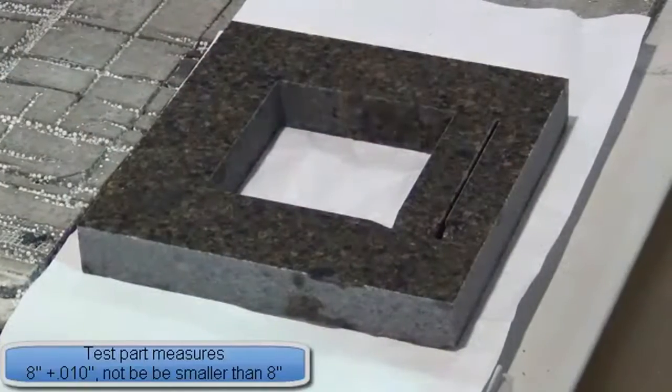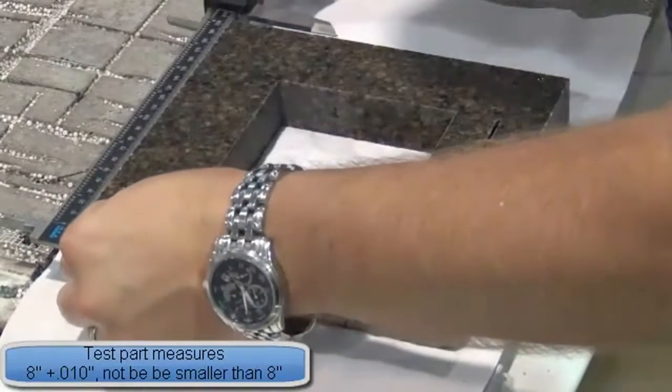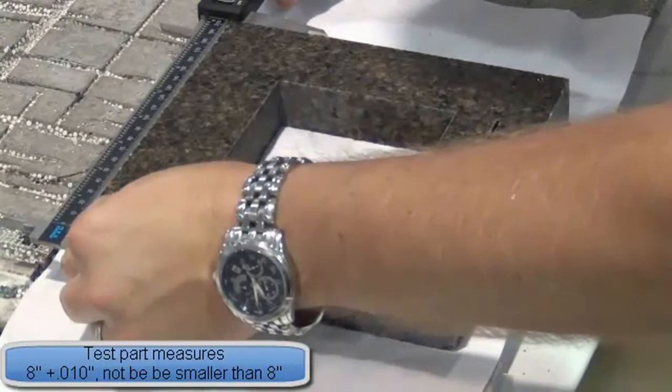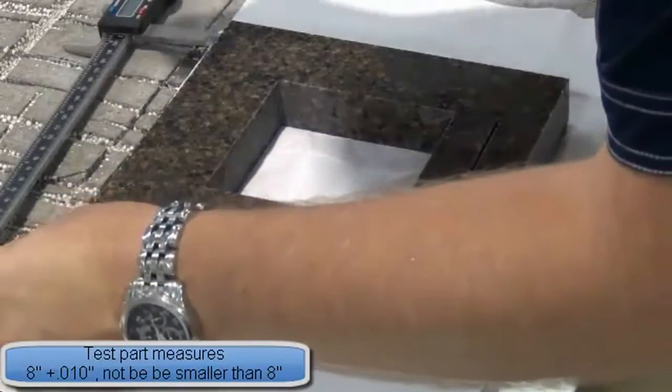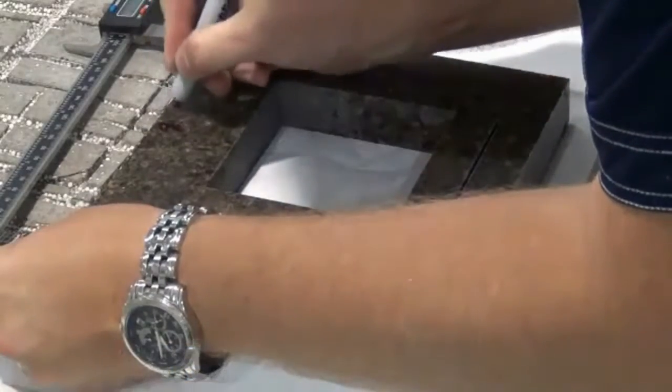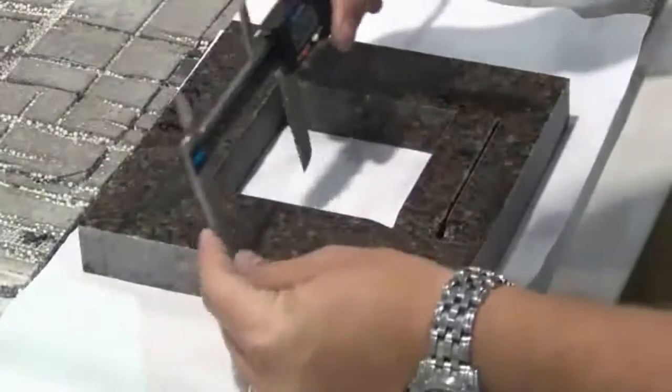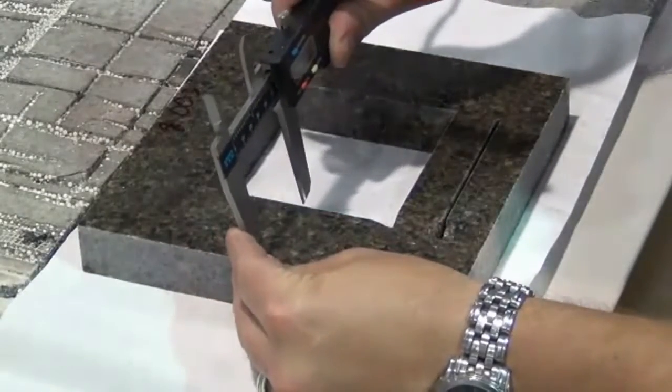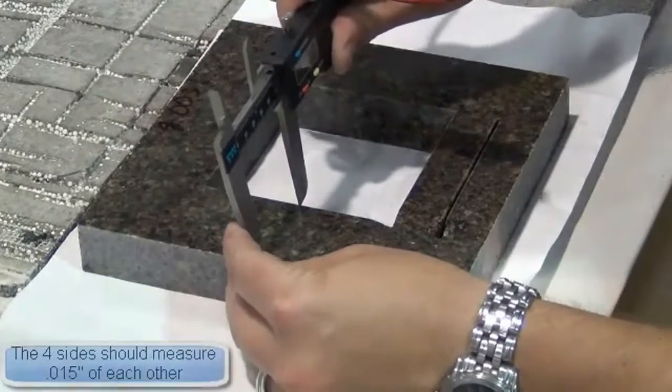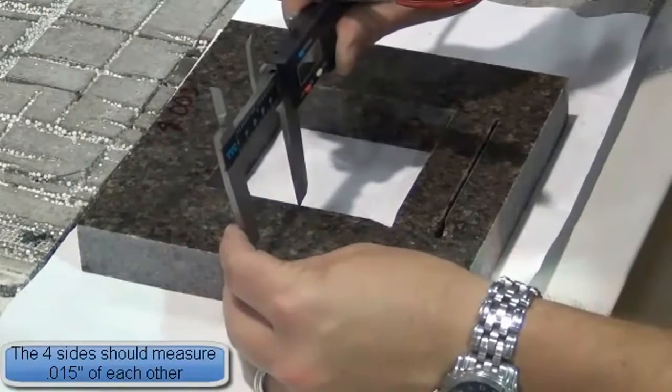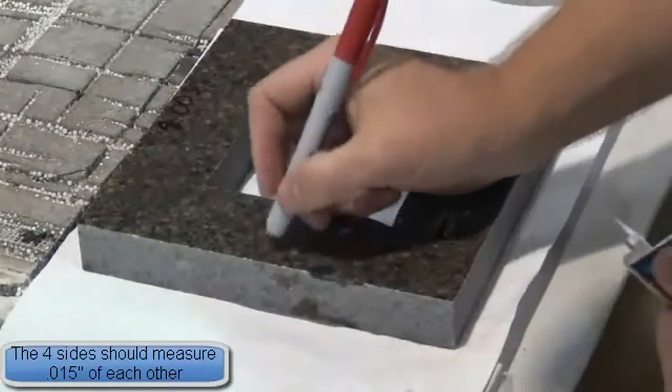With the caliper, measure the width of the part. This should measure 8 inches plus 10 thousandths minus 0 for a tolerance. Write this dimension down. Measure all four sides and write down the dimension of each side. These four sides should measure within 15 thousandths of each other.